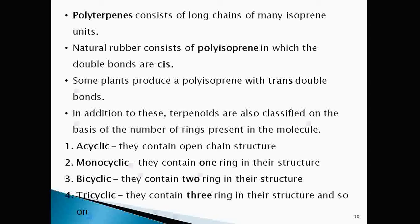In addition to this classification there is another classification based on the number of rings present in the molecule. Acyclic contain open chain structure, monocyclic contain one ring, bicyclic two rings, tricyclic three rings, tetracyclic four rings and so on.